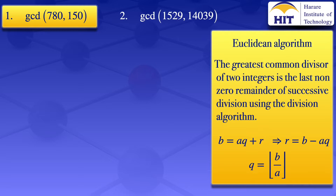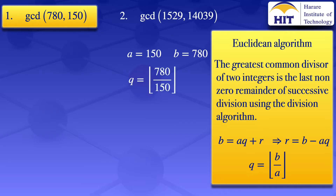When you are given such problems, you take the larger number to be B and the smaller number to be A. So in this case, our A will be 150 and our B will be 780. Our quotient Q is the floor value of 780 divided by 150, which gives us 5.